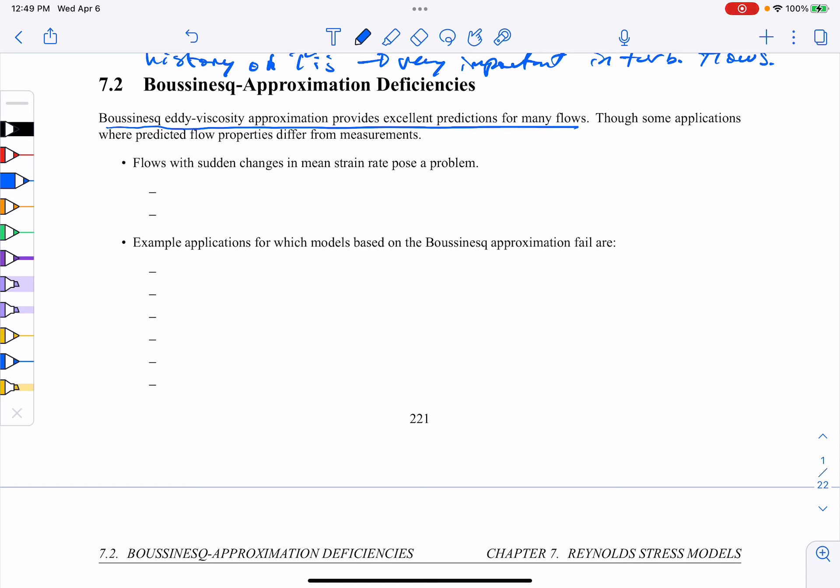And in particular, flows of sudden changes in mean strain rates pose some of the biggest problems, and the Reynolds stresses would therefore need to adjust quickly to changes in flow, which might be unrelated to time and length scales. And therefore, the Boussinesq approximation would probably fail.